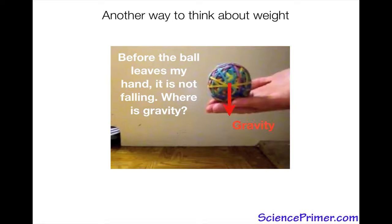The answer is gravity is constant. Gravity is always acting on the ball. So in order for the ball not to be falling in this condition, there must be some other force acting on it.